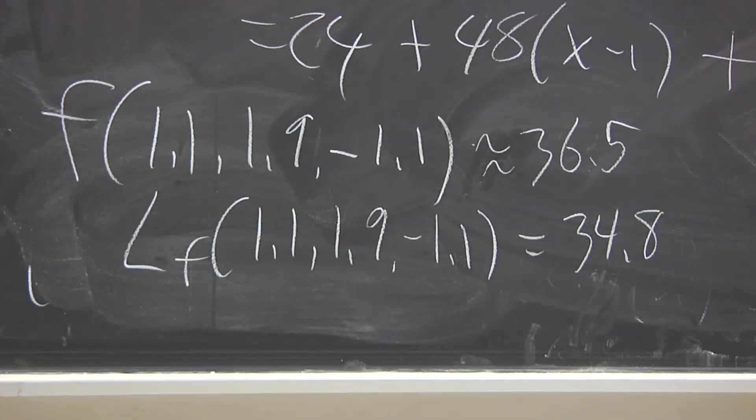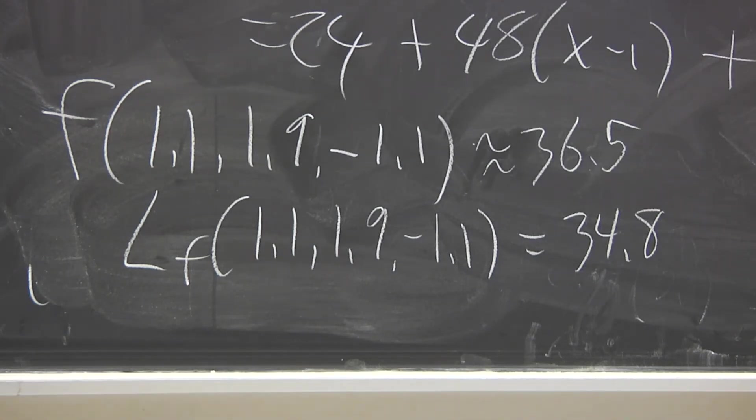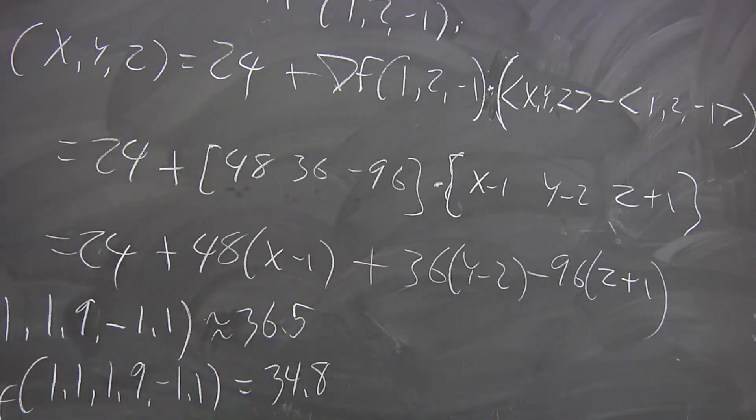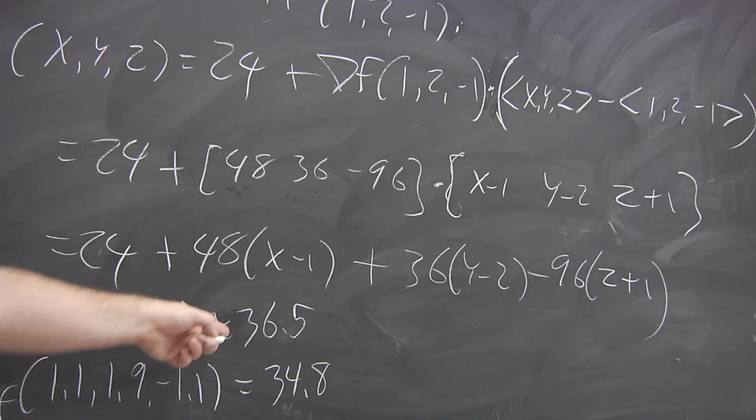So these small changes in the x, y, and z values, why is it amplified to cause a large change in the function value? What is it about this function that causes that to happen? How can we tell just from this? These are pretty steep slopes, 48, 36, -96. Whereas if both partial derivatives have been smaller in magnitude, change in x, y, or z would not have caused an error like that.